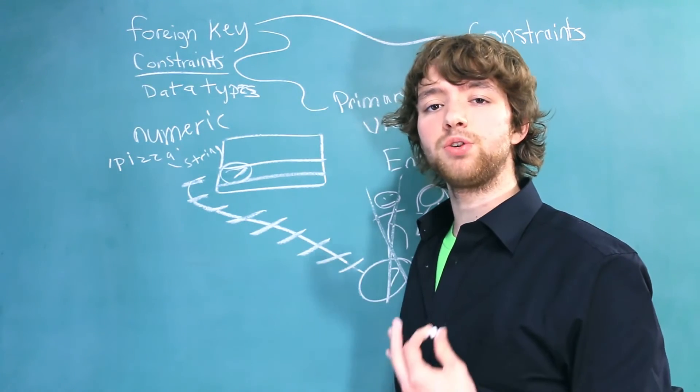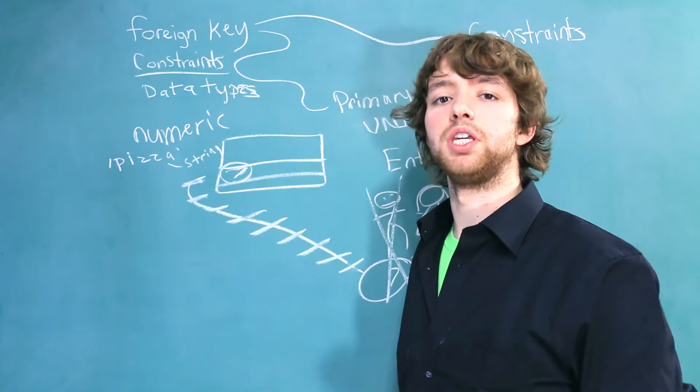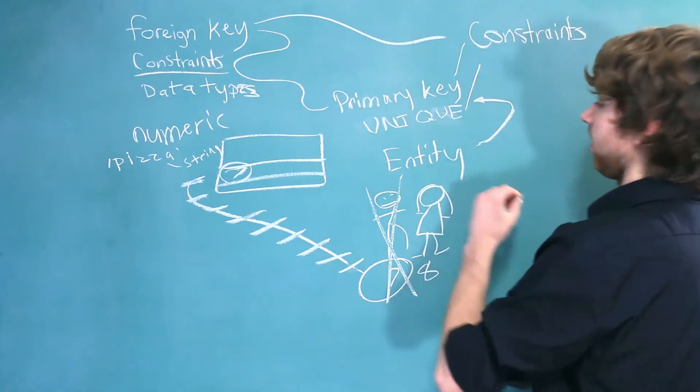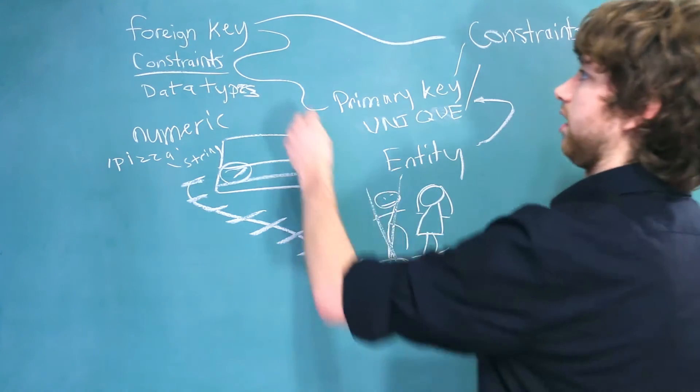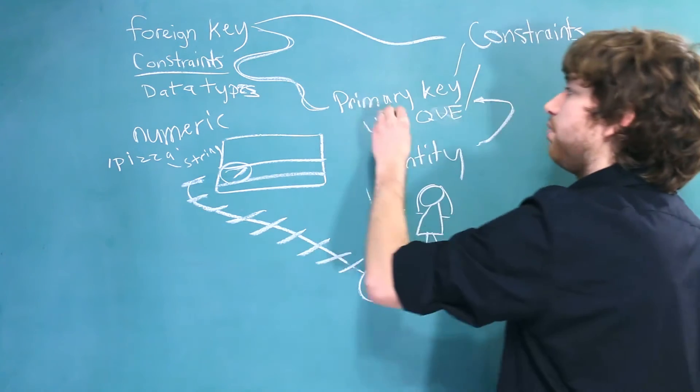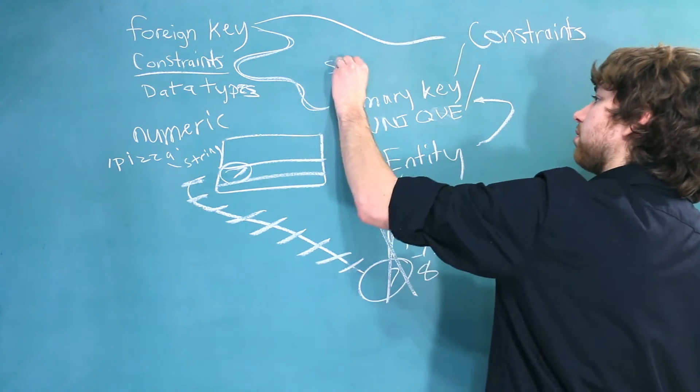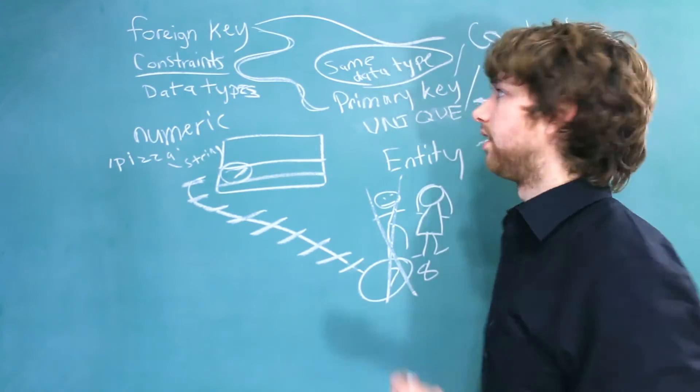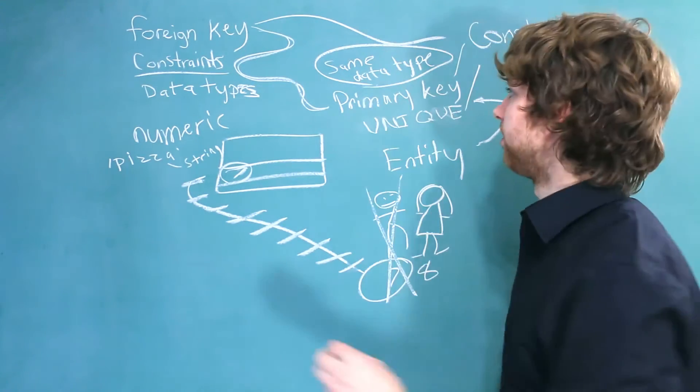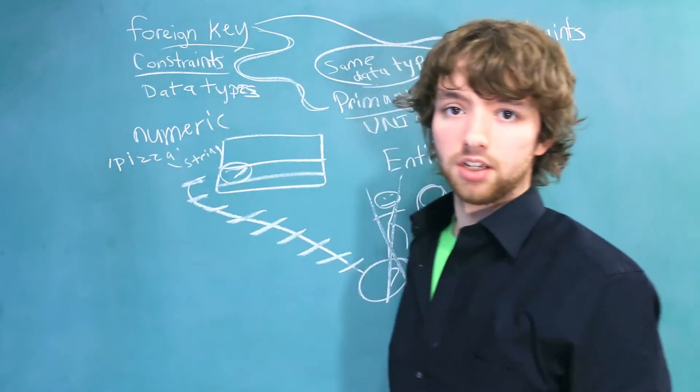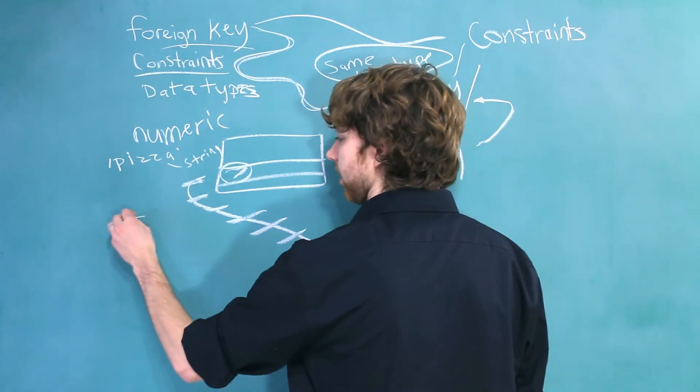There is one situation where you need to be extra careful with the data type that you give a column. When you have a foreign key, or right here, and it references a primary key, these both have to be the same data type. That's super important. If you're having problems creating foreign keys, that might be part of the problem. The primary key might be a different data type than what you were trying to make the foreign key. One other keyword I got for you is index.